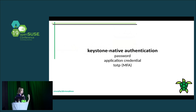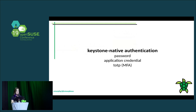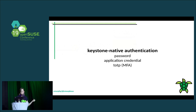Keystone as an authentication service supports a few different types of authentication natively. The standard is just basic password authentication — the user's password is validated against the hash in Keystone, or proxied to your LDAP directory for validation. Another method is application credentials, which is kind of like API keys — a way of delegating a narrower level of authorization to your applications without having to give them your password. And then there's TOTP with time-based one-time passwords, which is most useful in a multi-factor auth type of situation.